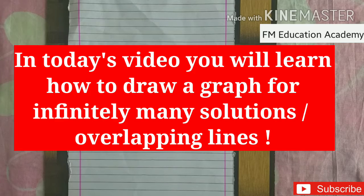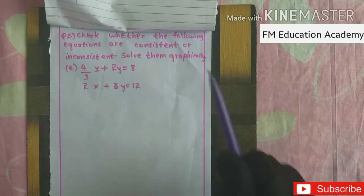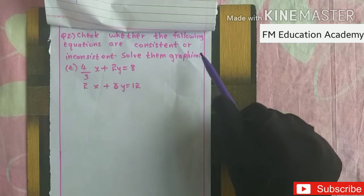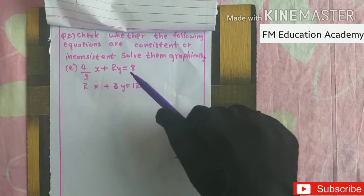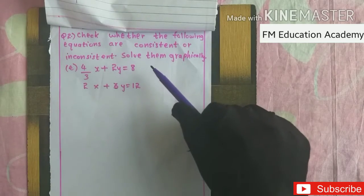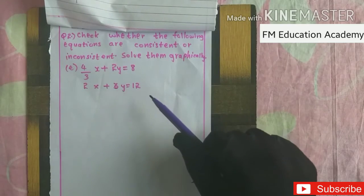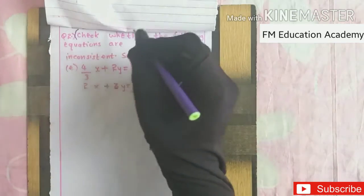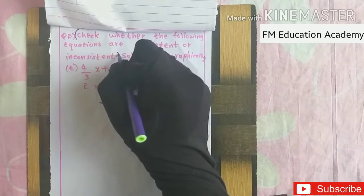In this lesson, we'll draw a graph when a pair of linear equations is given, and those equations give us an infinite solution — a consistent system. The question asks: check whether the following equations are consistent or inconsistent, and solve them graphically: (4/3)x + 2y = 8 and 2x + 3y = 12.